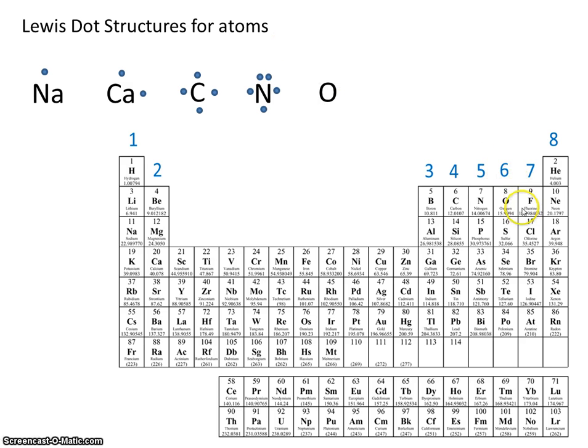Next we have oxygen. Oxygen is in group six. It has six valence electrons. Chlorine is located here in group seven. It has seven valence electrons. And our last one is neon, located in group eight, with eight valence electrons.